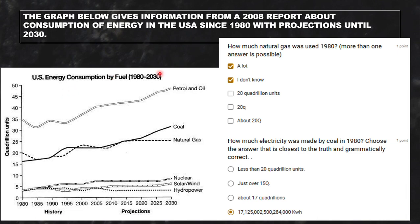There's no way to know exactly how much gas was used because this just tells us how much energy was made. Next: how much electricity was made by coal in 1980? Less than 20 quadrillion units — a lot less. You need to be as close as possible to the answer: just over 15 Q? No, something closer — about 17 quadrillion.